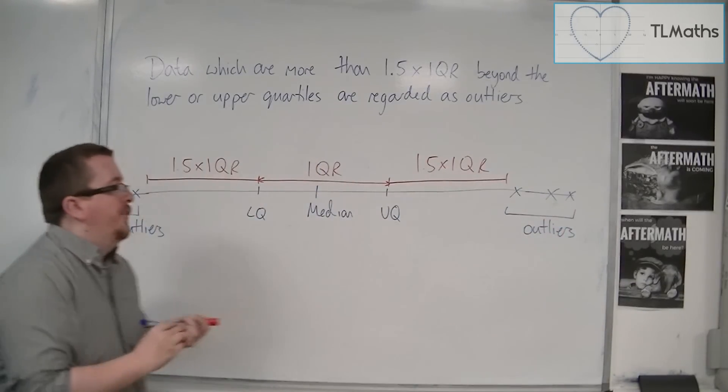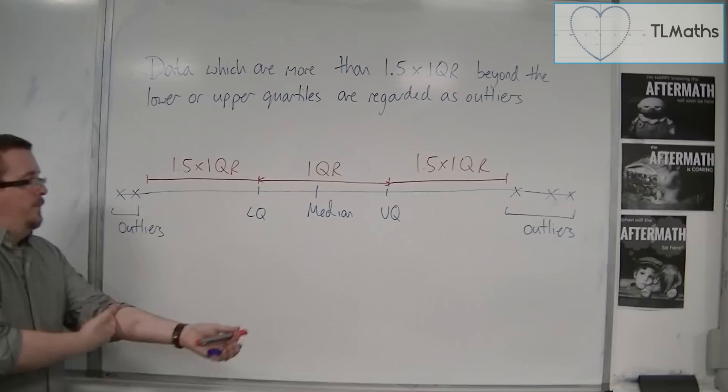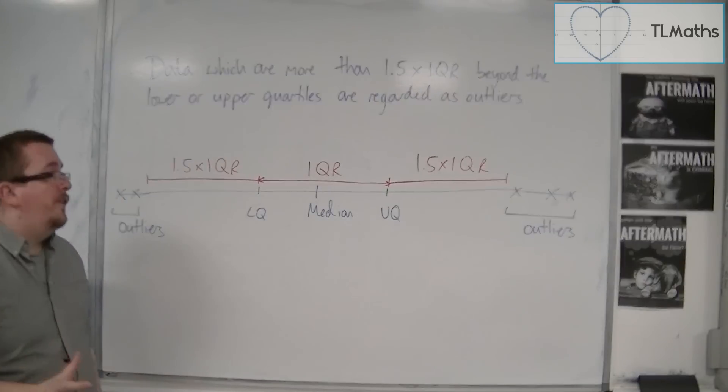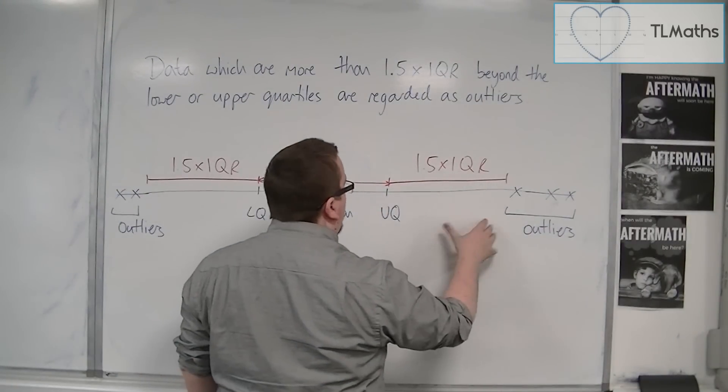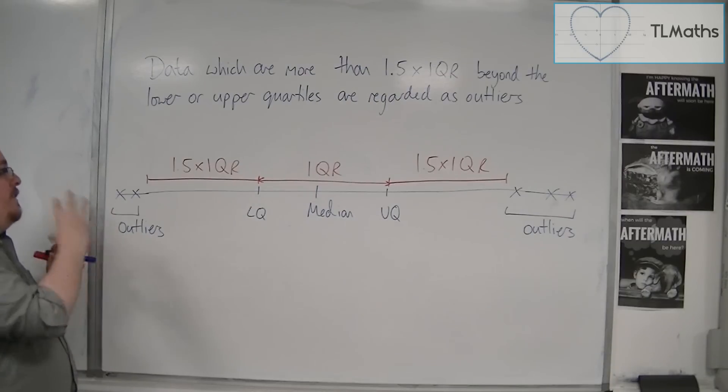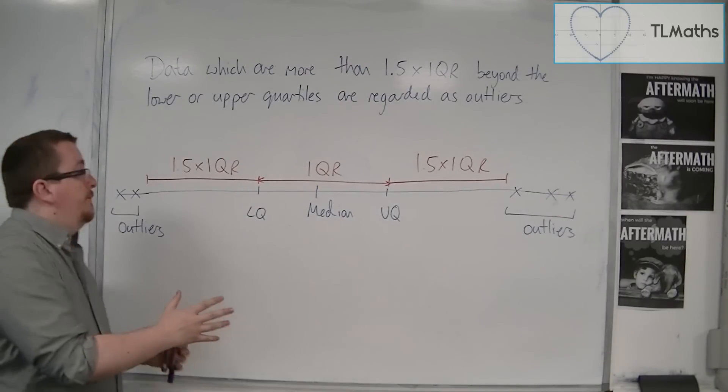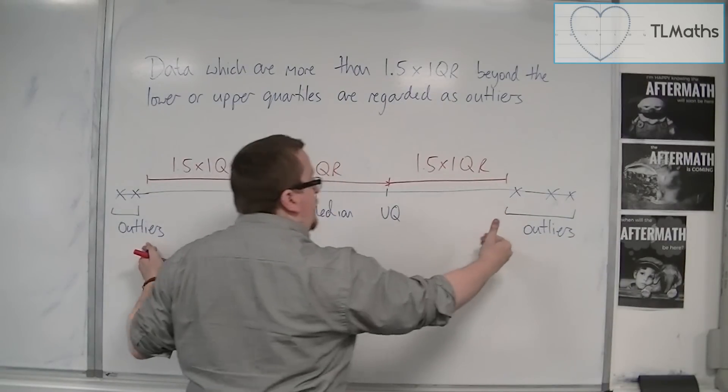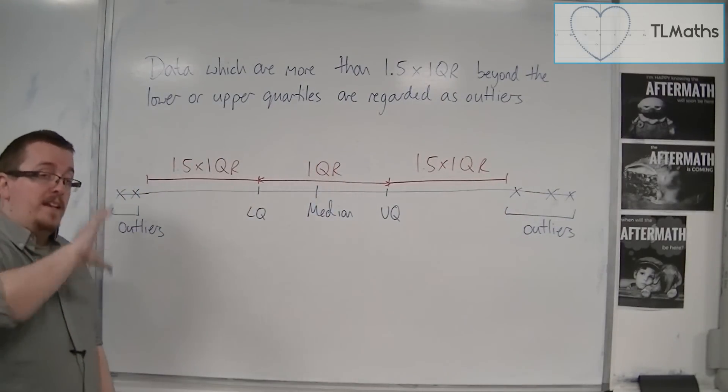So what you're going to want to do in these situations is define the interquartile range, multiply it by 1.5, add it onto your upper quartile, and subtract it from your lower quartile. And then if there are any data points below that value or above this value, then they can be considered as outliers.